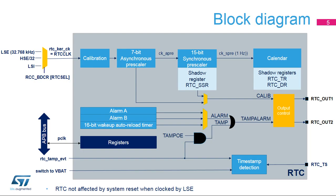Here is the RTC block diagram. The RTC has two clock sources. The RTC clock, or RTC CLK, is used for the RTC timer counter, and the APB clock is used for RTC register read and write accesses.